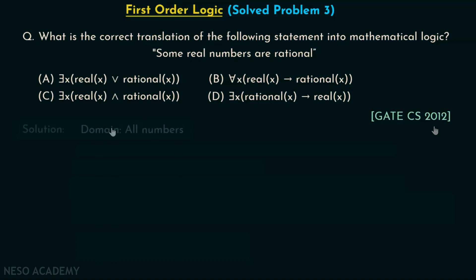Let's move on to the solution. Let us suppose that the domain consists of all numbers. What we will do here is try to convert all these options — that means these logical expressions — into their equivalent English sentences.